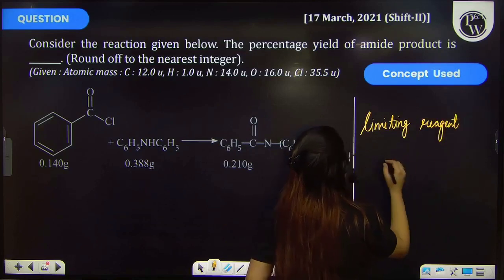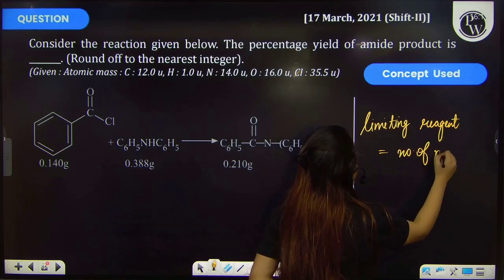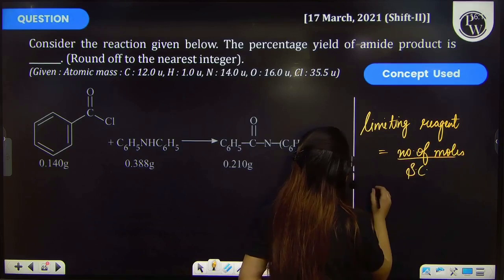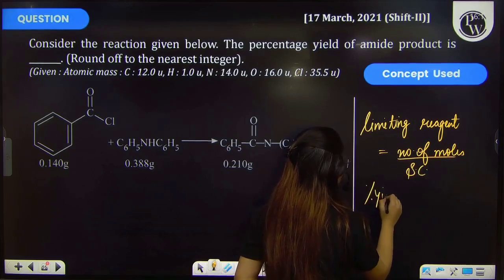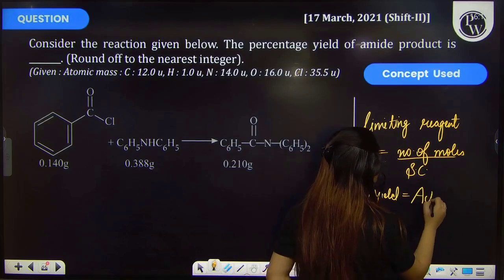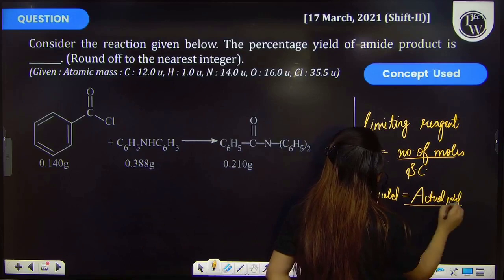That can be calculated by dividing the number of moles with stoichiometric coefficient. Also, we should know how to calculate the percentage yield that is equal to the actual yield upon theoretical yield.